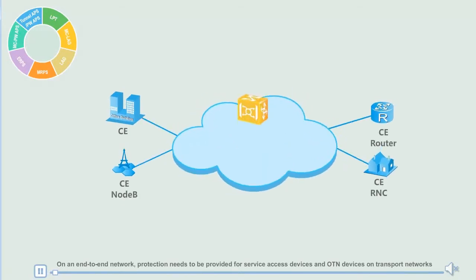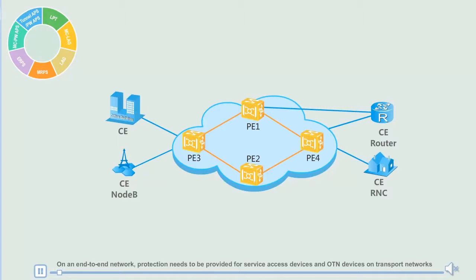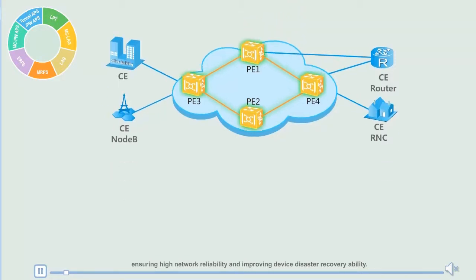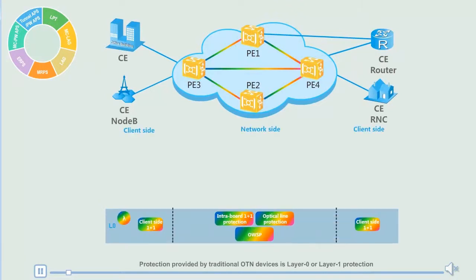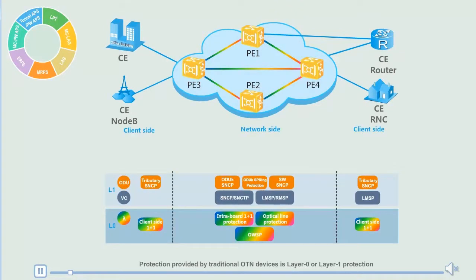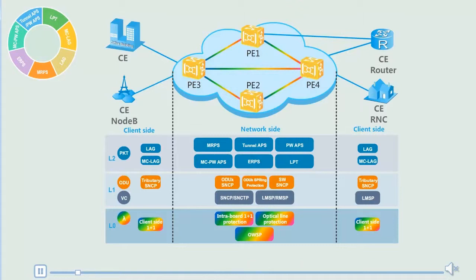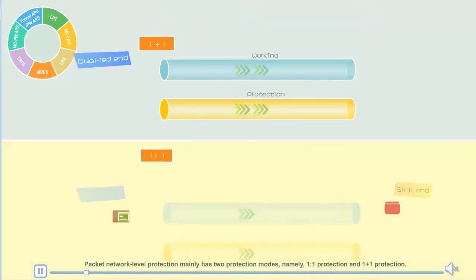On an end-to-end network, protection needs to be provided for service access devices and OTN devices on transport networks, ensuring high network reliability and improving device disaster recovery ability. Protection provided by traditional OTN devices is layer 0 and layer 1 protection, and packet service protection provided by MS-OTN devices is layer 2 protection. In this video, I will describe the various types of packet service protection provided by MS-OTN devices.